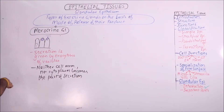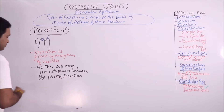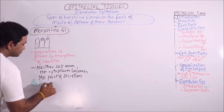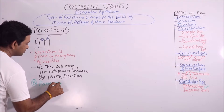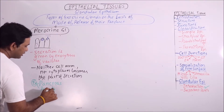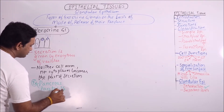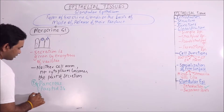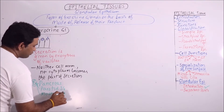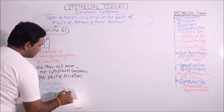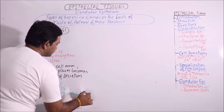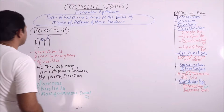The examples of merocrine glands include the pancreas, parotid salivary gland, and most of the cutaneous sweat glands.